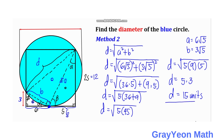That is our answer for the second method — the same value of 15 units that we got in the first method.